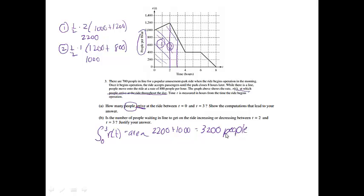That one was worth two points. If you wrote down the integral and included that it's going from 0 to 3, that was worth a point. If you got the right answer, that was also worth a point. Part B is the number of people waiting in line to get on the ride increasing or decreasing between t equals 2 and t equals 3.